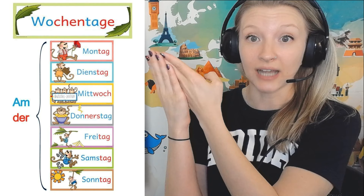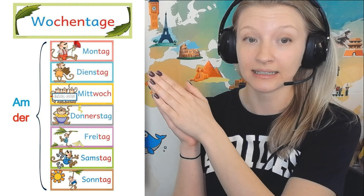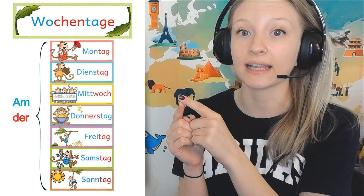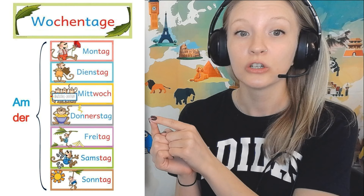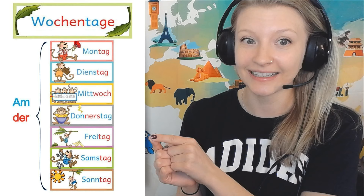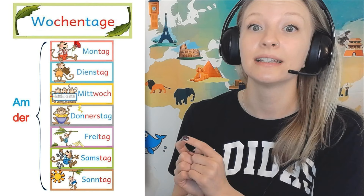Montag — Monday. Dienstag — Tuesday. Mittwoch — Wednesday. Remember that the W in German is said like a V in English, so this is Mittwoch. Donnerstag is Thursday. Freitag is Friday. Samstag is Saturday. Sonntag is Sunday.